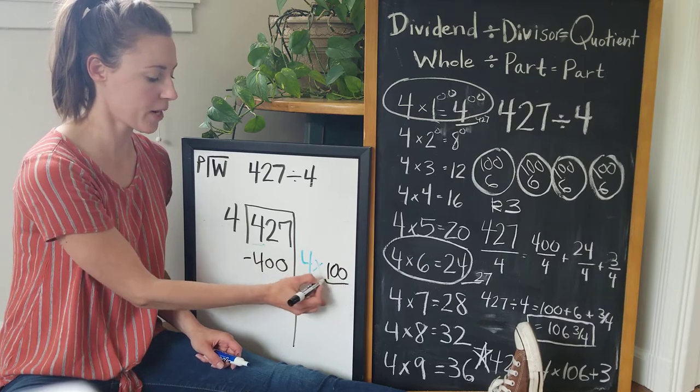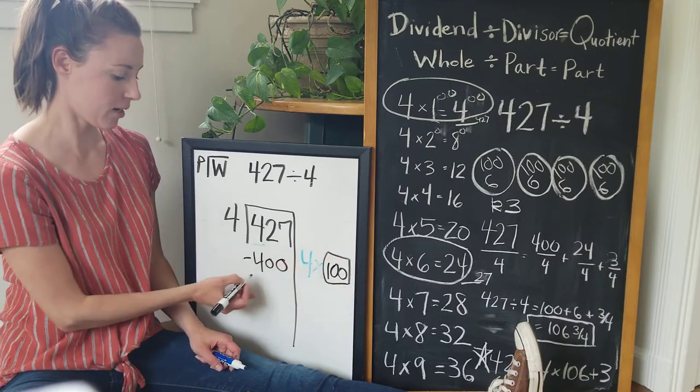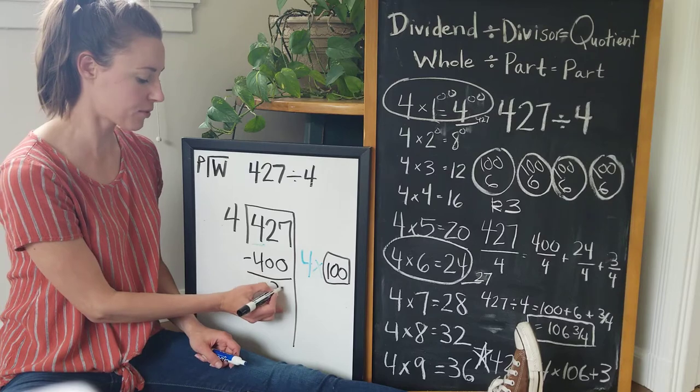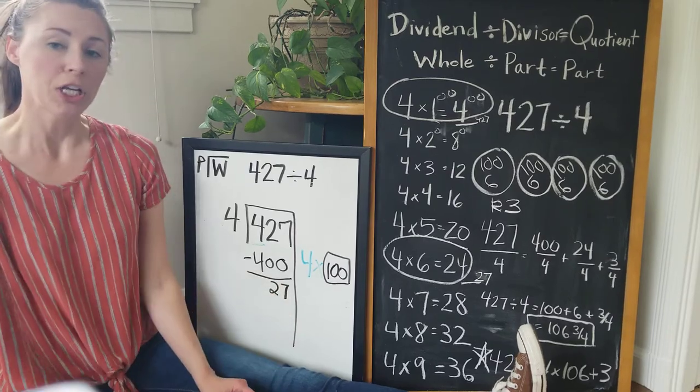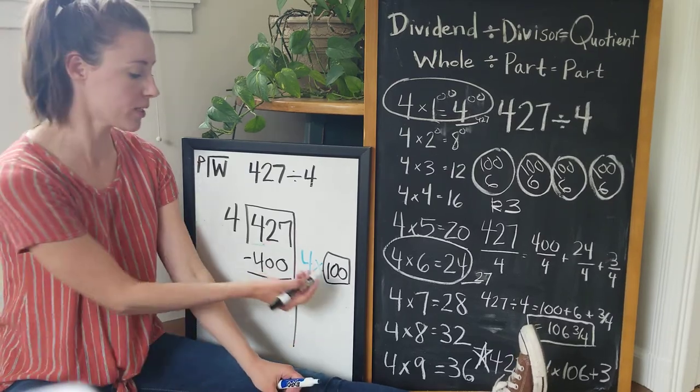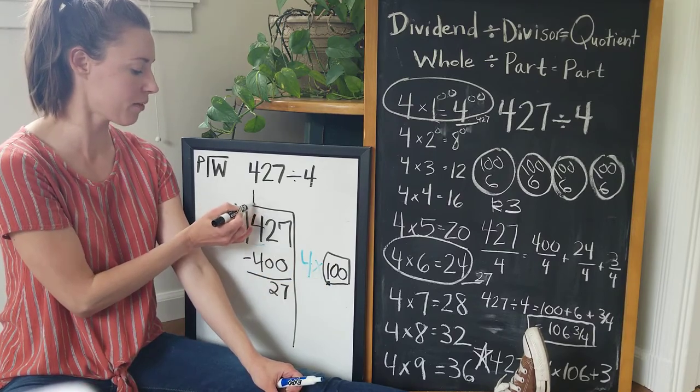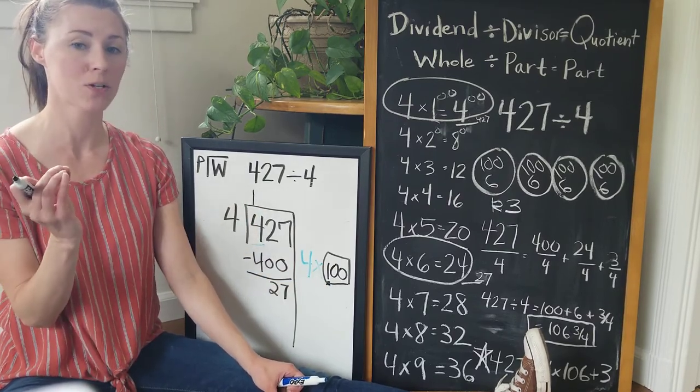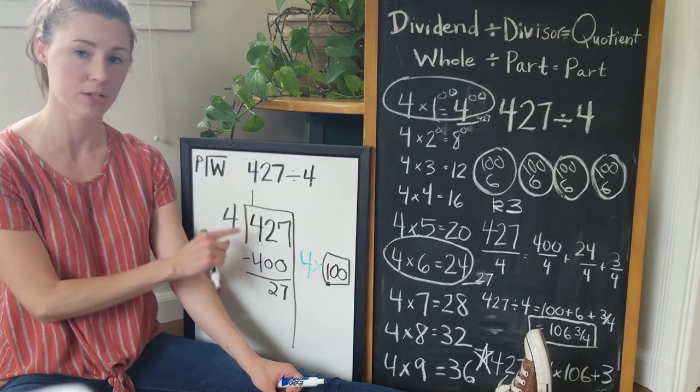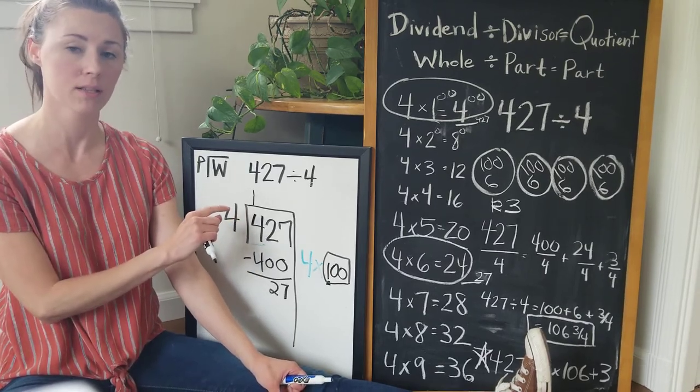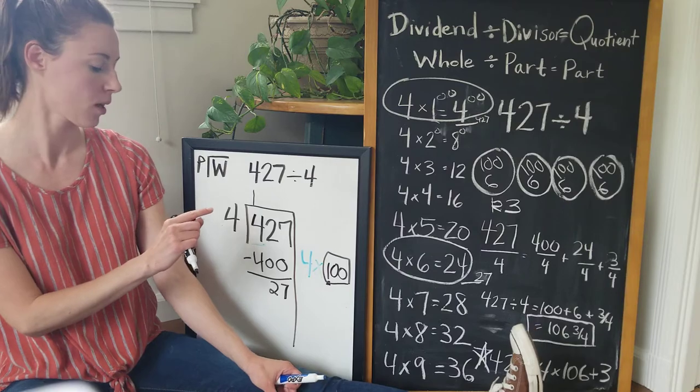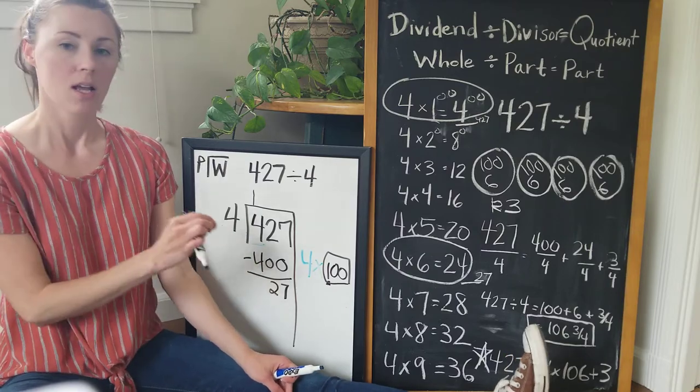So what is inside each group right now? 100. I have 27 left. Okay, now what you could do is you could take this one and you could put it right here above the four, because the one represents 100 and this is the hundreds place value. You can also wait till the very end to write your answer. So now I have 27 left.